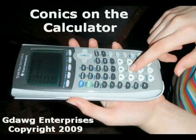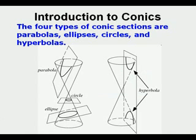Conics on the Calculator. The four types of conic sections are parabolas, ellipses, circles, and hyperbolas.